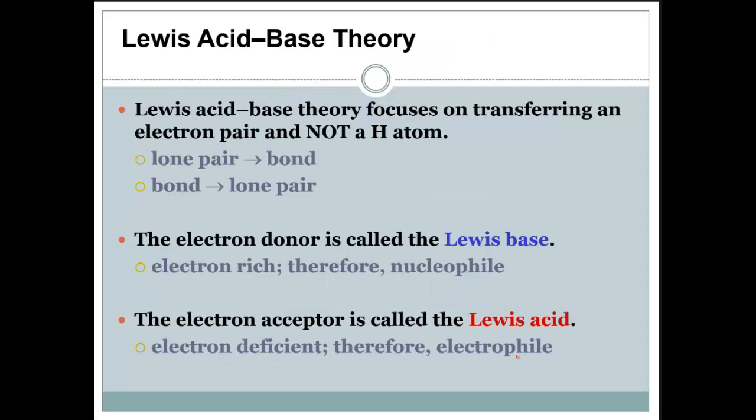All right, so we've talked about Arrhenius. We've talked about Bronsted-Lowry. Now we're going to talk about Lewis acid-base theory, which is even more general than the other two we've discussed. Lewis acid-base theory focuses on transferring an electron pair, not just a hydrogen atom. So the lone pair becomes a bond, or the bond becomes a lone pair.